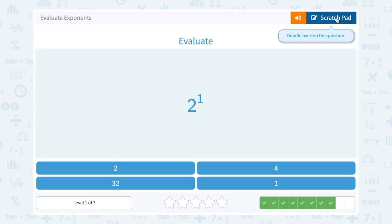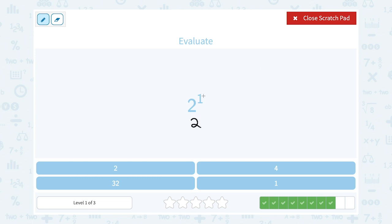Two to the first power. Well here that's telling us to write out two one time, so that would just be two.